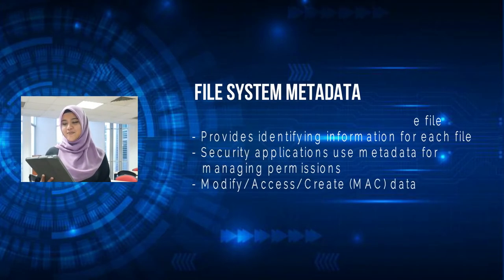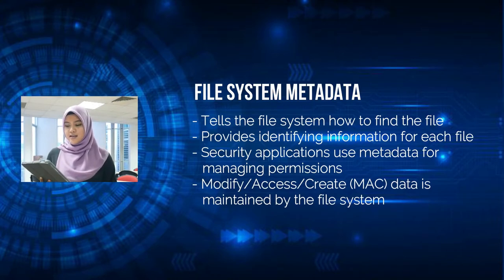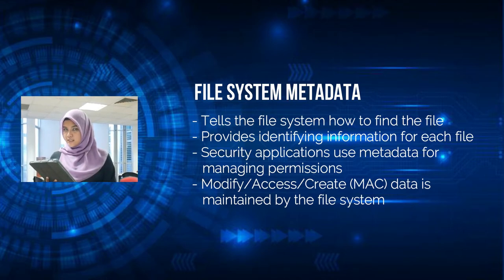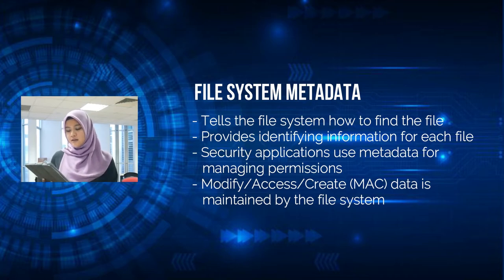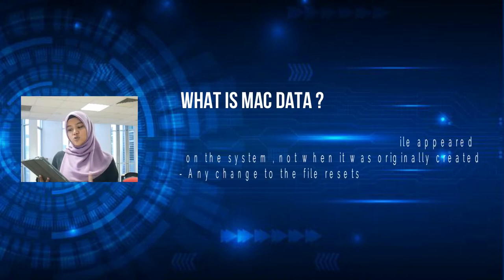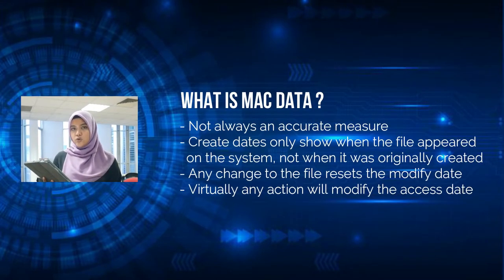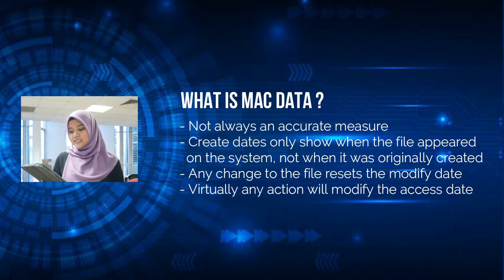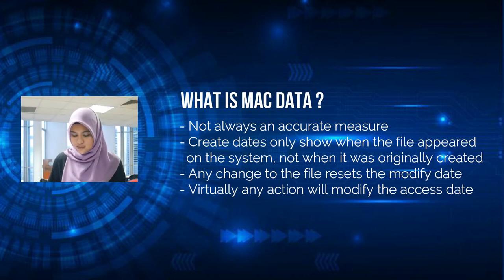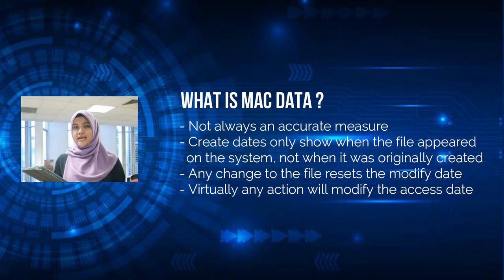File system metadata identifies each file, providing identifying information. Security applications use metadata to manage permissions, and the modify, access, and create dates — known as MAC data — are maintained by the file system. MAC data is not always an accurate measure: creation dates only show when a file appeared on the system, not when it was originally created. Copying a file to the system modifies the creation date, many utilities can modify these dates, and virtually any action will modify the access date.